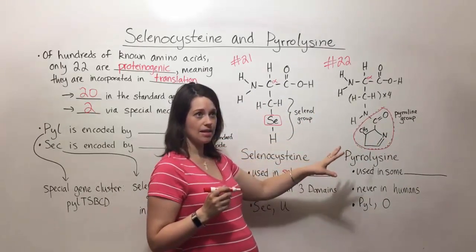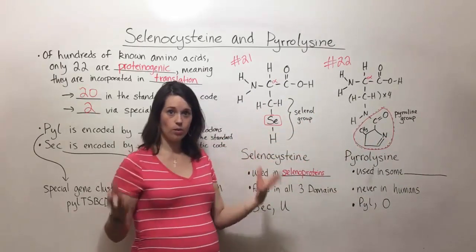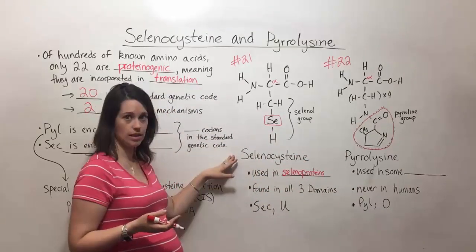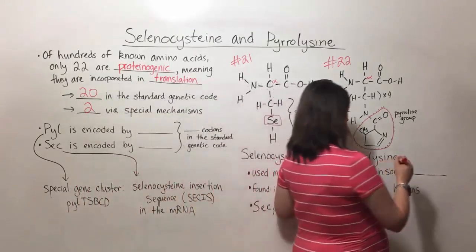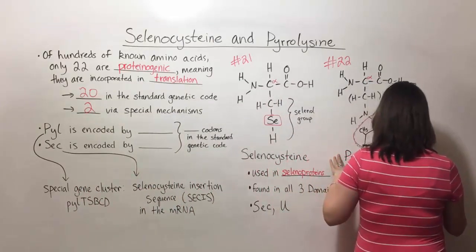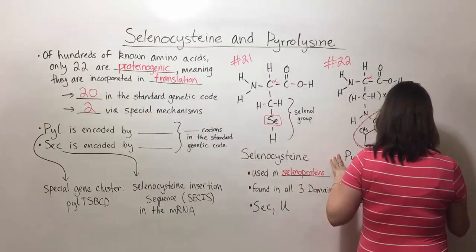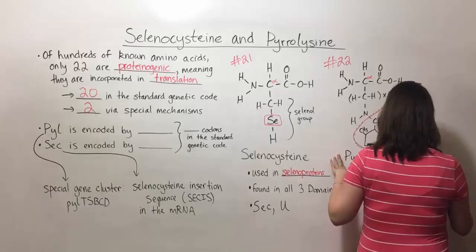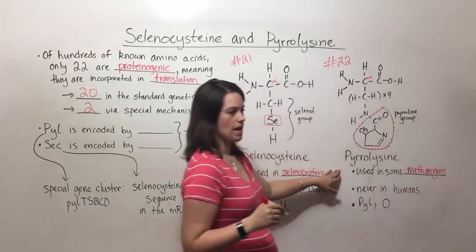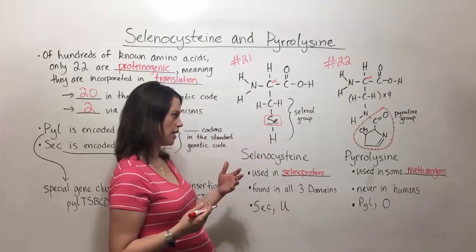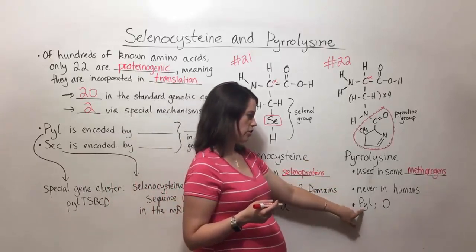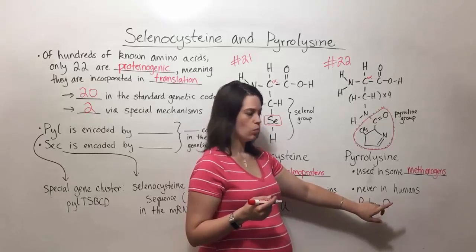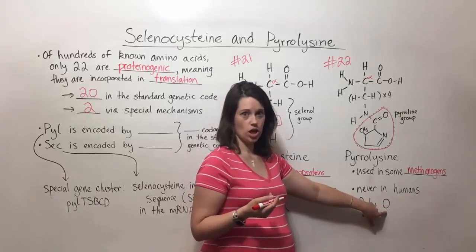It is not as common throughout living organisms as selenocysteine. It's most well known for being used in some methanogens. Methanogens being a type of extremophile bacterium. It's not used in humans at all. Its three-letter abbreviation is PYL and its one-letter abbreviation is O.